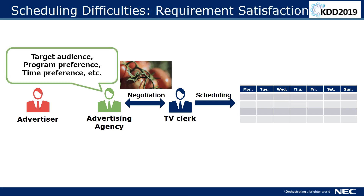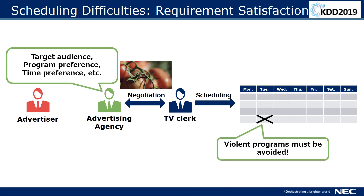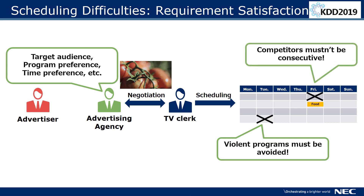The ad request may include requirements from the agencies to maximize promotion effectiveness. For example, violent programs are not suitable for food ads, or ads of competitors should not be shown consecutively. So TV clerks need to create schedules carefully while considering such constraints.